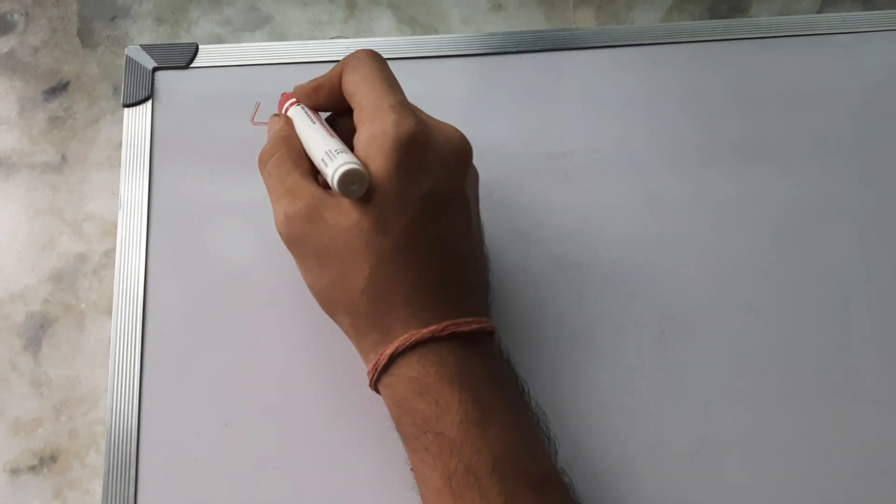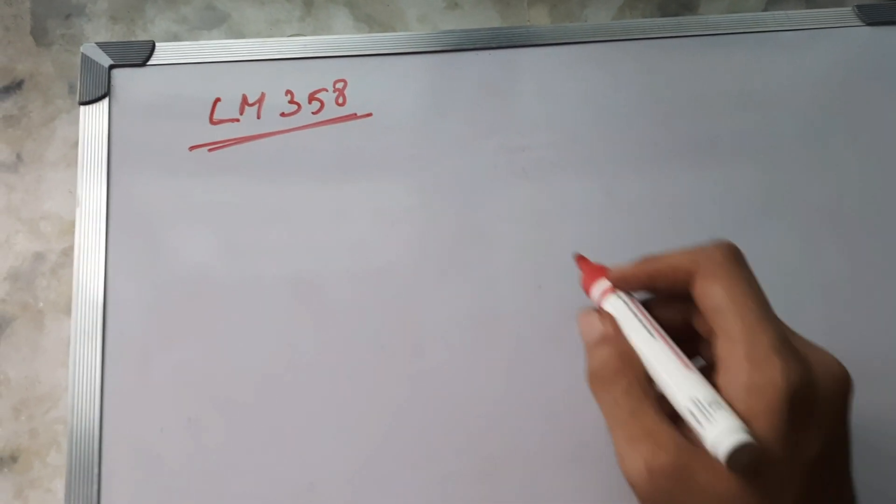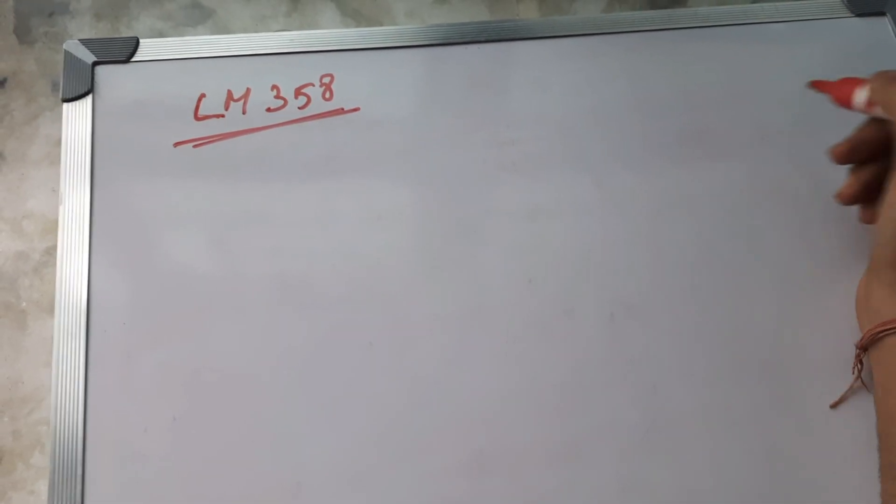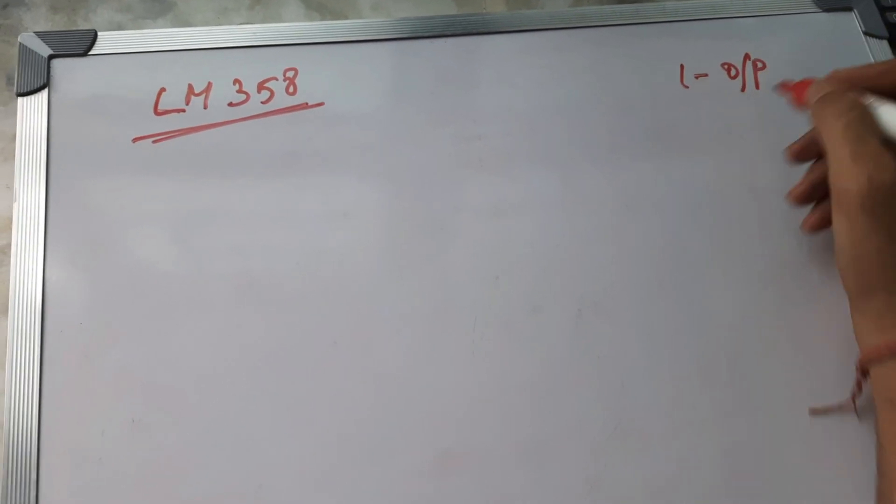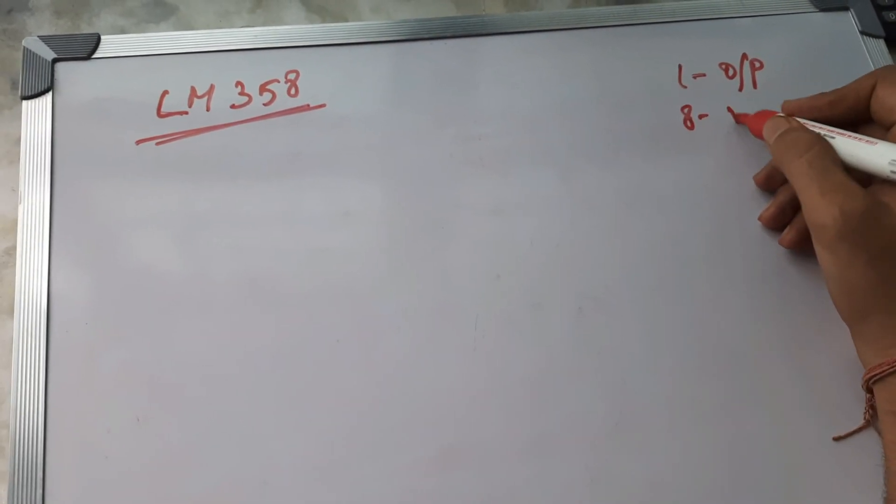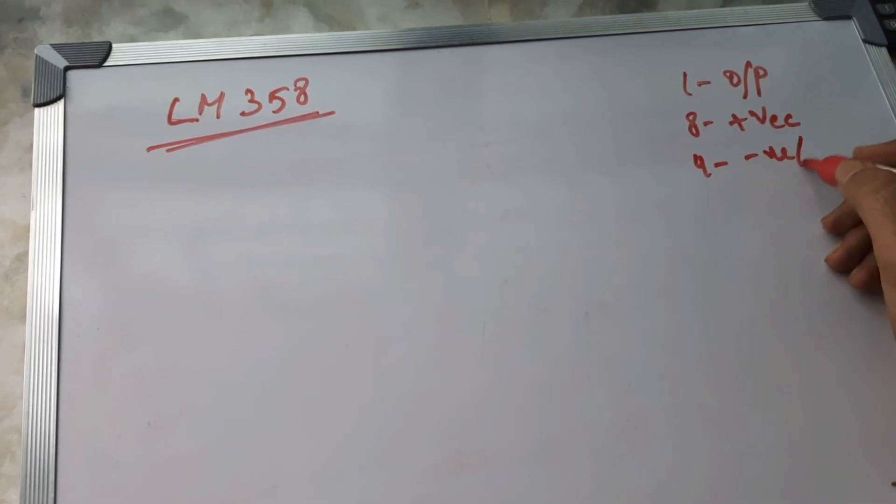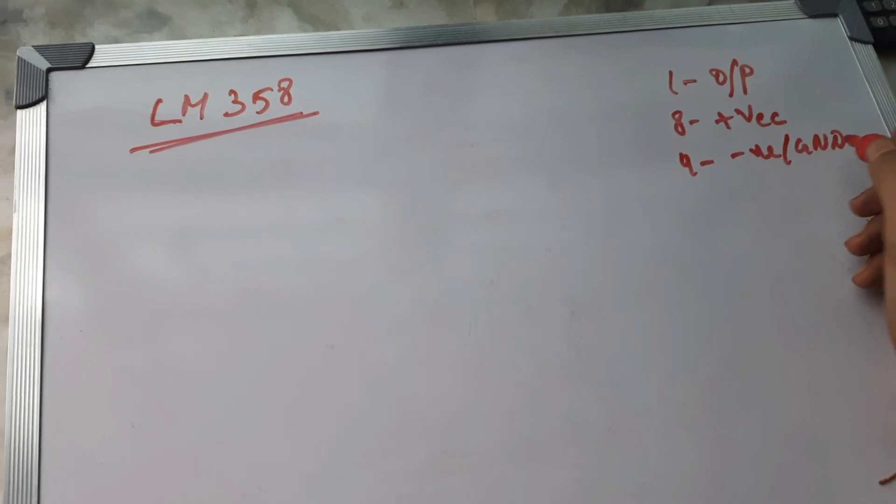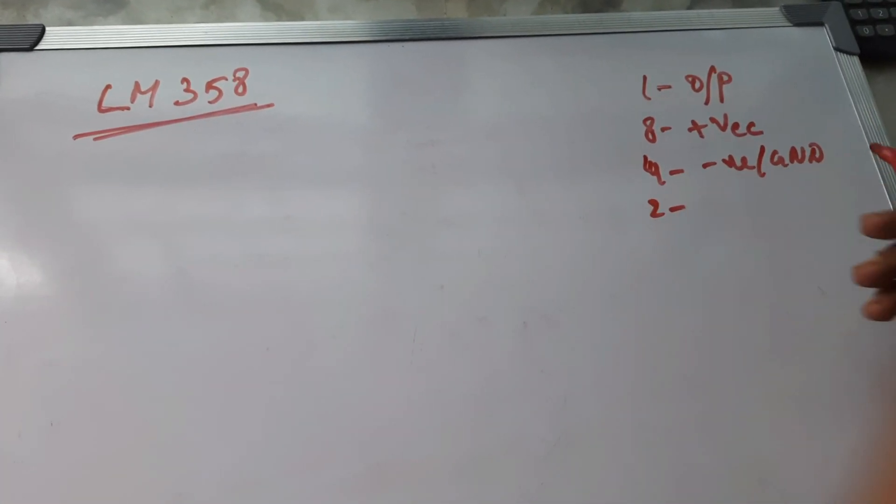The op-amp name is LM358. It is an IC which is easily available in the market. It has the first pin as the output, it has the eighth pin as the positive VCC supply, and the fourth pin as the negative or the ground. You can provide both at it.